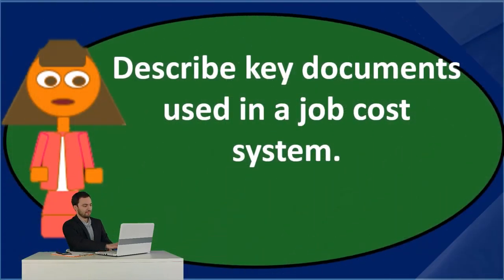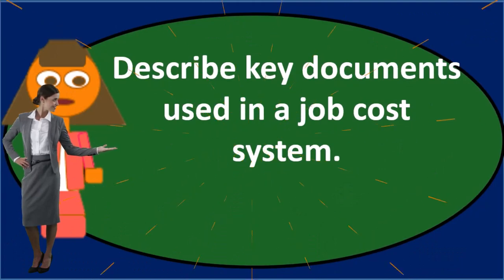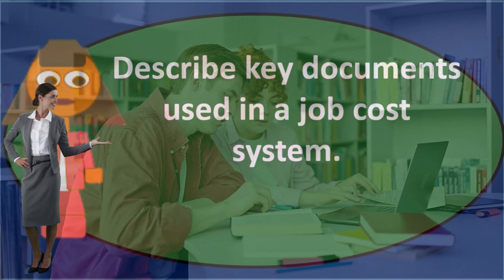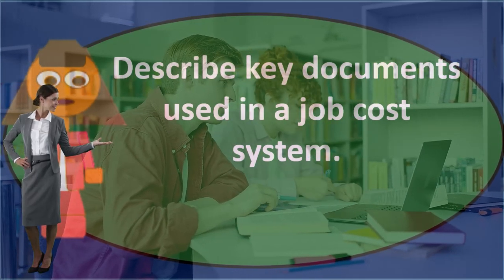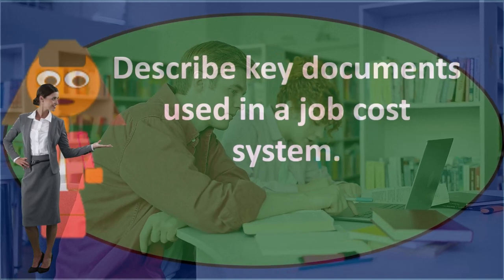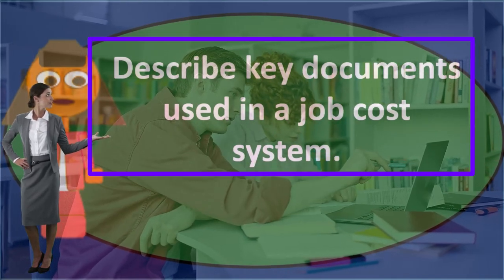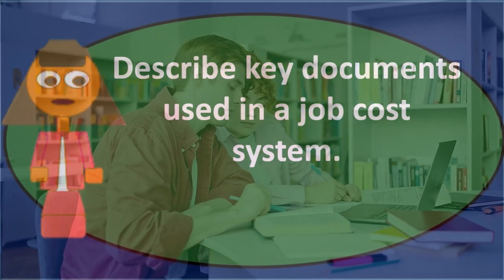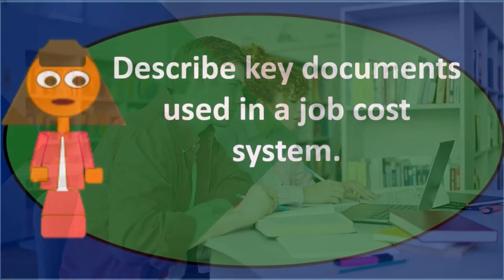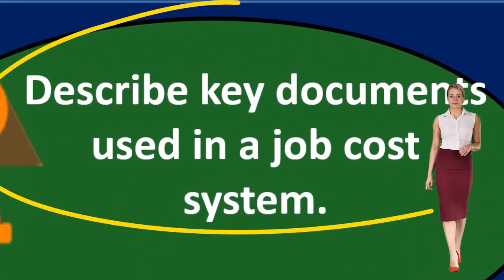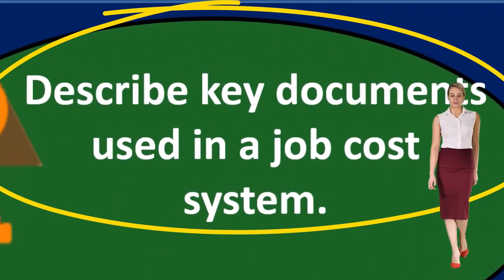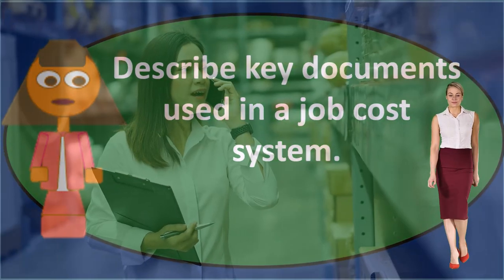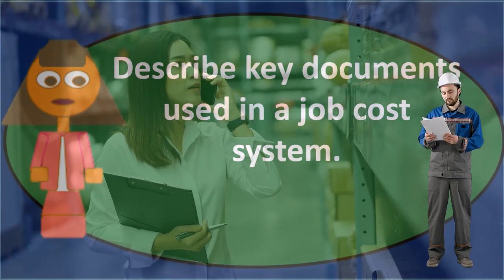It's useful to think about the process of how raw material is going to be converted to finished goods, and then think about the forms that will be used along that process. There are three types of costs we need to think about: direct materials, direct labor, and overhead. We can consider what type of documentation is going to be there for each of those costs as they are applied to inventory.